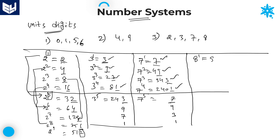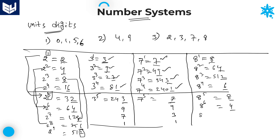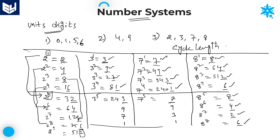Similarly for 8: 8^1 = 8, 8^2 = 64, 8^3 = 512, 8^4 has units place 6. It is not mandatory to write the entire number — just write the units place. 8^5 units place 8, 8^6 units place 4, 8^7 units place 2, 8^8 units place 6. The units place digits 8, 4, 2, 6 repeat continuously after every 4 cycles. Therefore, the cycle length for digits 2, 3, 7, 8 is equal to 4.